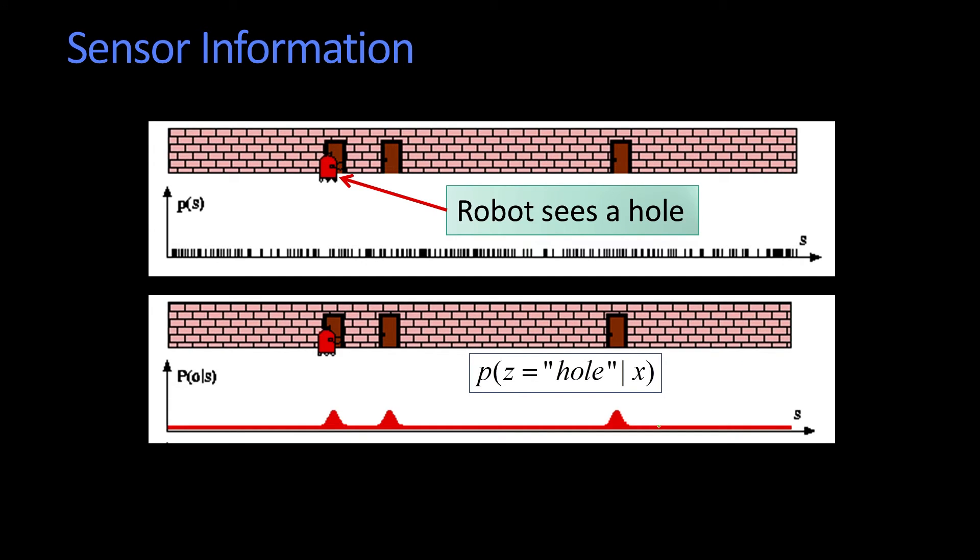So these values here, these are not the probability that I'm at that location given that I saw a hole. It's the probability that I would see a hole given that I was at that location.